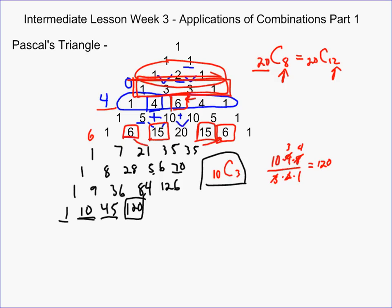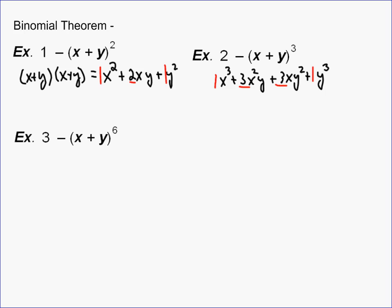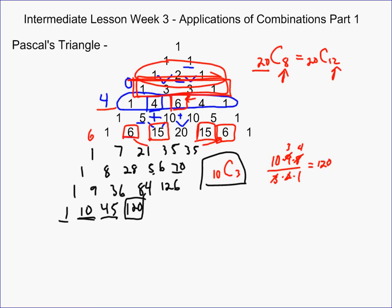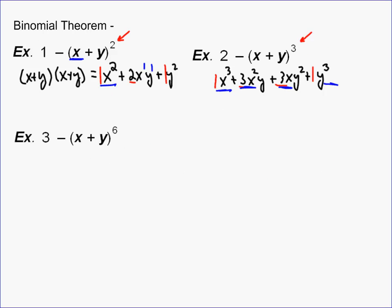The power tells us which row to use, and then we determine each entry based on the power of the first term. The powers of x start at the highest power and decrease, while the powers of y start at zero and increase. For x plus y to the 6th, we use row 6 of Pascal's Triangle: 1, 6, 15, 20, 15, 6, 1. So the expansion gives you x to the sixth, then 6x to the fifth y, then 15x to the fourth y squared, then 20 — where both powers are equal — then 15x squared y to the fourth, then 6x y to the fifth, and finally y to the sixth.